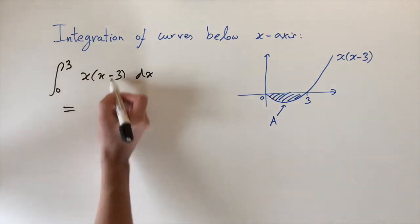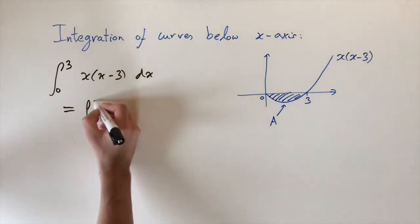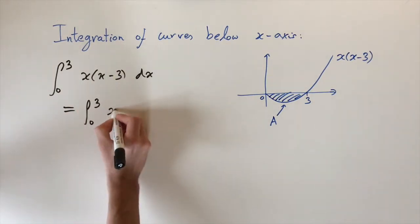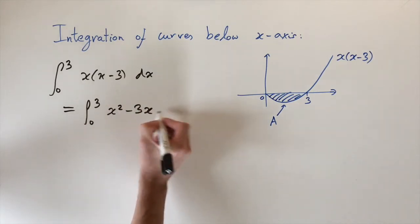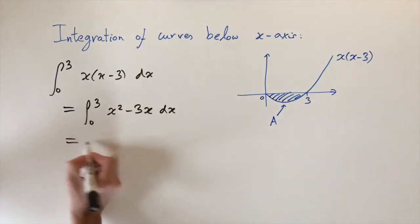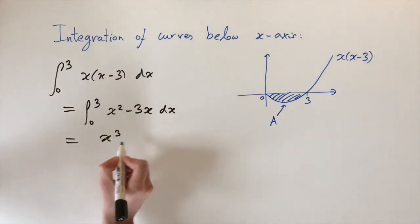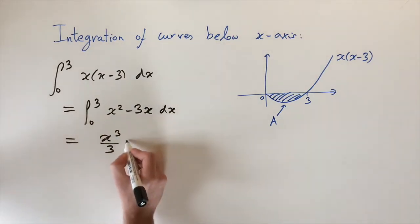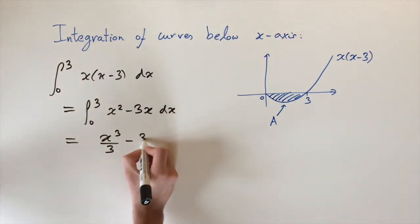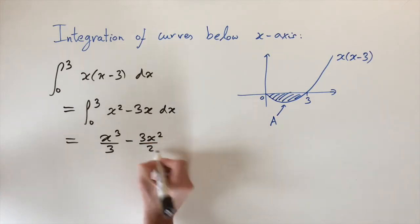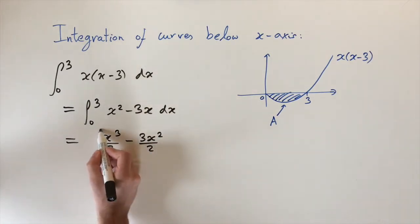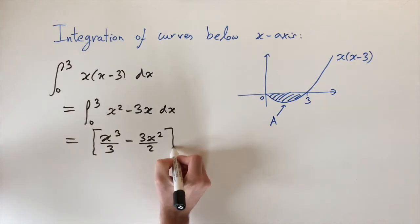So let's just do that. We need to expand this out first. Integral between 0 and 3 of x squared minus 3x dx. And then we can integrate this now, so x squared turns to x cubed divided by 3, and then this minus 3x turns to minus 3x squared divided by 2. And we just need to evaluate this at the limits, so 3 and 0.